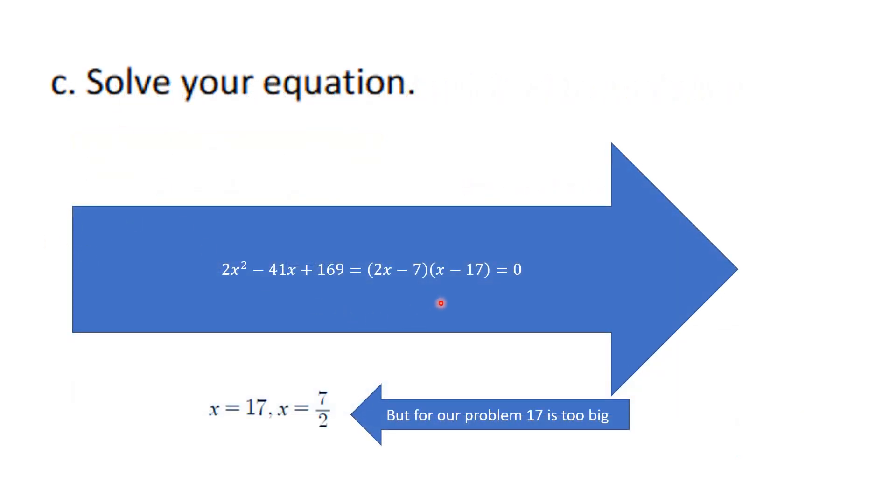You're supposed to solve your equation. This factors nicely, and the answers that you get when it factors are going to be 17 and 7 over 2. But for our problem, the biggest that x could be is 8. So, 17 is too big.